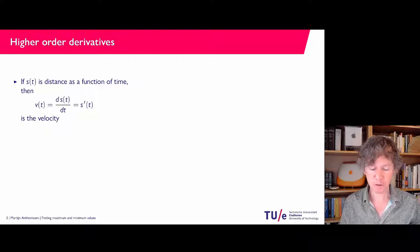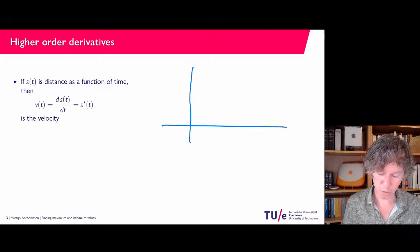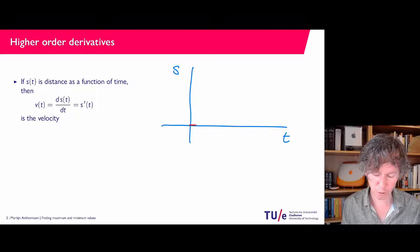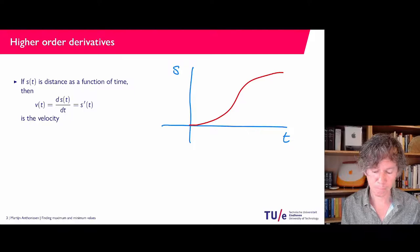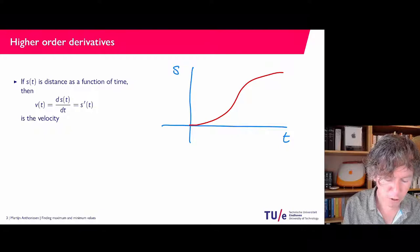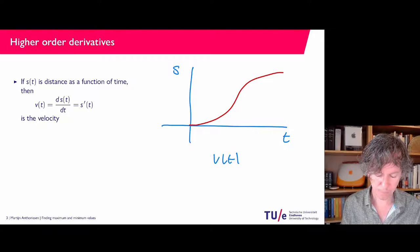First, higher-order derivatives. In a previous video, we saw that if you're traveling by train, you could make a graph with time on the horizontal axis and distance traveled on the vertical axis. You would get a curve where you're picking up speed, reaching maximum speed, and then reducing speed again. The velocity of the train, v of t, is s prime of t — the first derivative.